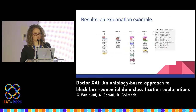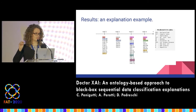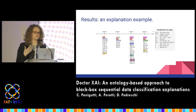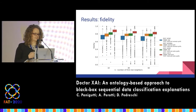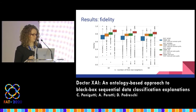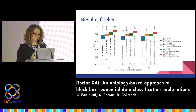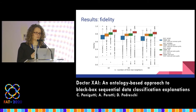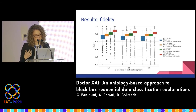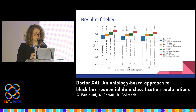This is an example of an explanation. We map the decision rule back onto the sequence — this is a patient with four visits — and you can see how the method highlights the most important codes in the sequence for the classification. In terms of fidelity, these are the distributions at different k values, which is the number of real neighbors taken from the dataset. Two main findings: creating synthetic patients actually helps the fidelity of the interpretable model — how well it mimics the black box — and using ontological information further improves fidelity.